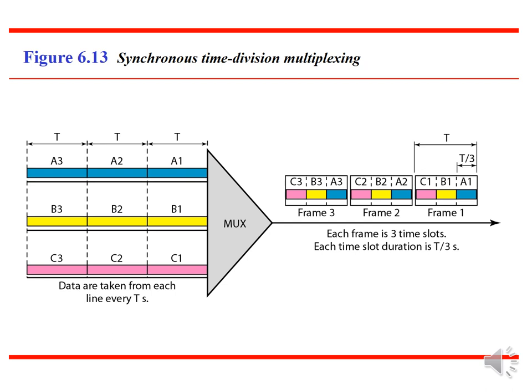In synchronous TDM, we need to concentrate on time slots and frames. The data flow of each input connection is divided into units where each input occupies one input time slot. A unit can be one bit, one character, or one block of data. Each input unit becomes one output unit and occupies one output time slot. However, the duration of an output time slot is n times shorter than the input time slot — if an input time slot is t seconds, the output time slot is t/n seconds, where n is the number of connections. A unit in an output connection has shorter duration and travels faster.